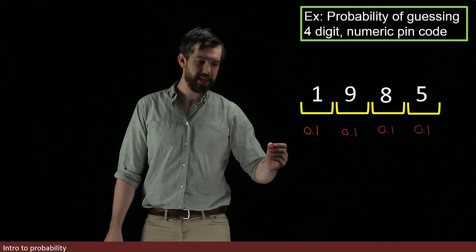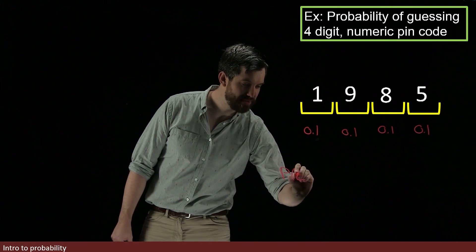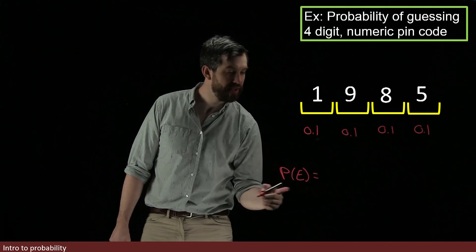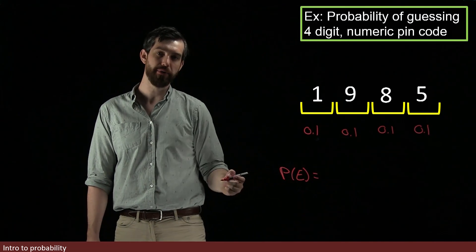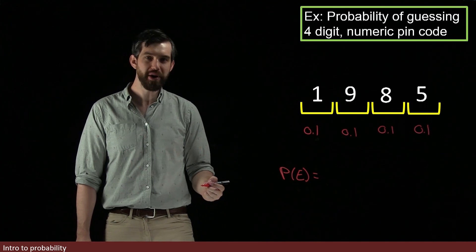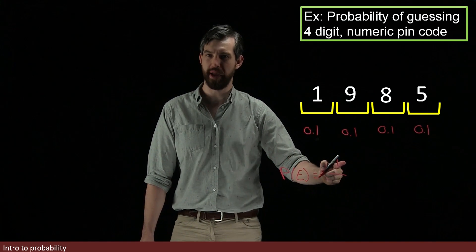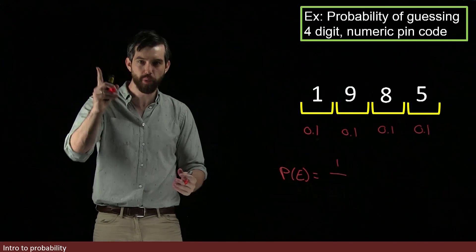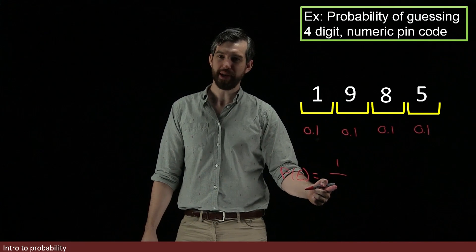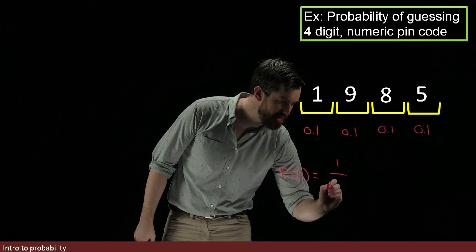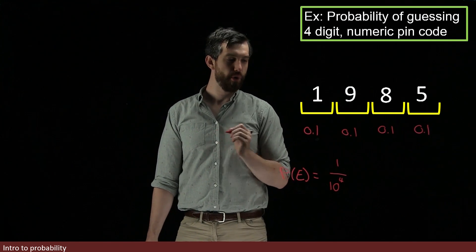And so the probability that I have one specific one, I'm just going to write P(E) here, so I don't have to figure out some better name for it. The probability of guessing your PIN code is going to be the one value, you only have one PIN code, so the number in our event is only one, your specific PIN code, divided by the total number of possibilities, which is going to be 10 to the power of 4.